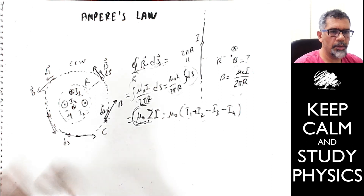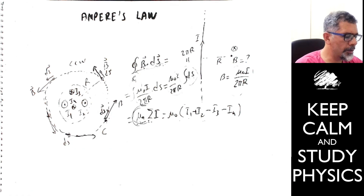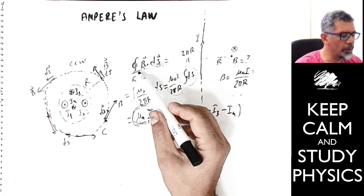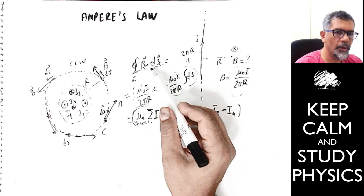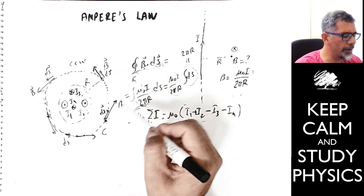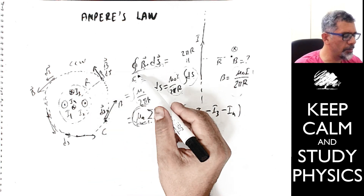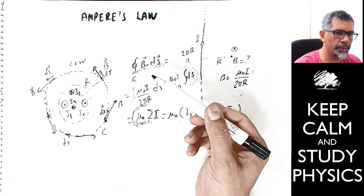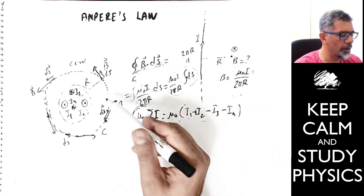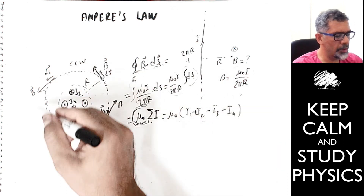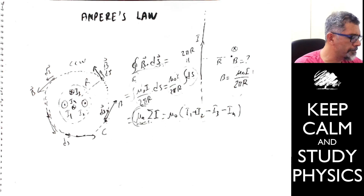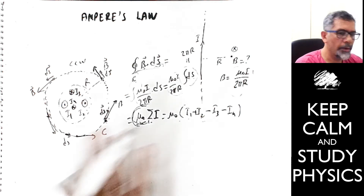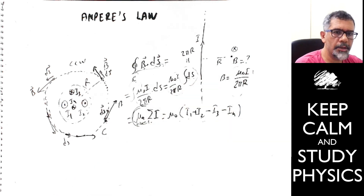This is Ampere's law. It is very useful for calculating a closed line integral along a certain path. The line integral is a closed path integral — you start and end at the same point. That's Ampere's law.